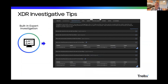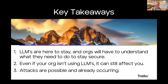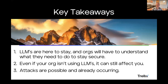In our investigations, we have something called investigative tips. All the rules we have coming into XDR come with all kinds of questions we ask around that data. This is a big part of what we bring to the table — if you can get the data to us, you get the power of asking all of these investigative tips against it. As key takeaways: as you've seen from ChatGPT and everything else, LLMs are here to stay and organizations are going to have to understand what they need to do to stay secure. Even if your org isn't using LLMs, it might still affect you because data you have out there on the internet may be scraped and put into them. Attacks are certainly possible, already occurring, and are being catalogued. Looking forward to any questions, and I appreciate your time today.